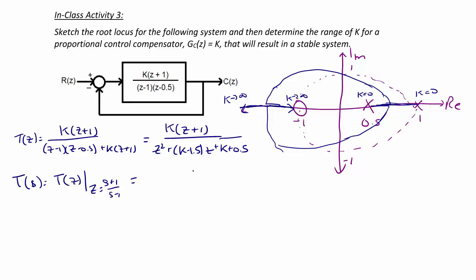So t of z is equal to z times z minus 1 over z squared plus the quantity 1 minus 2k over 2k s plus 3 over 2k. Now we're going to create our Routh-Hurwitz table.